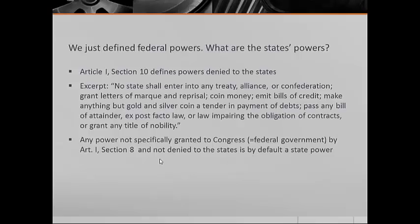But you might be asking yourself: what are the states' powers? For this we look at Article I, Section 10, which works a little differently. Section 10 does not outline specific powers given to the states but talks about powers denied to the states. For instance, no state shall enter into any treaty, alliance, or confederation — so Pennsylvania cannot join a treaty of non-aggression with Germany or France; only the federal government can do this. Any power not specifically granted to Congress in Article I, Section 8 and not denied to the states is by default a state power.